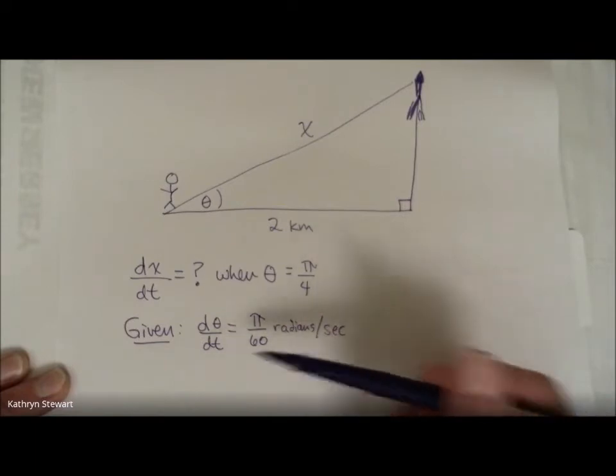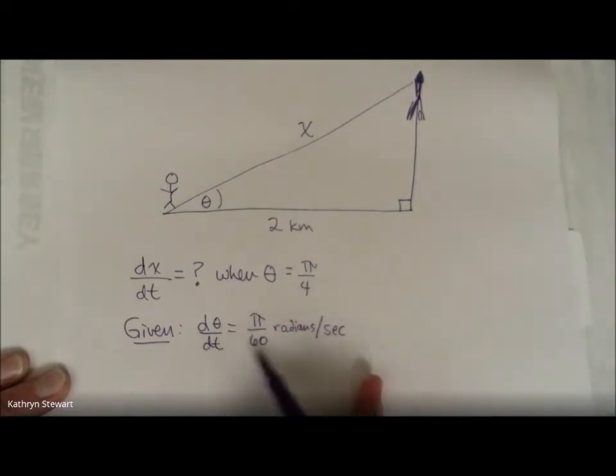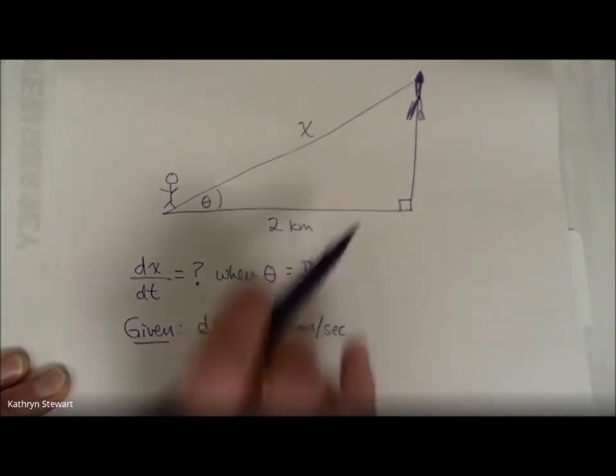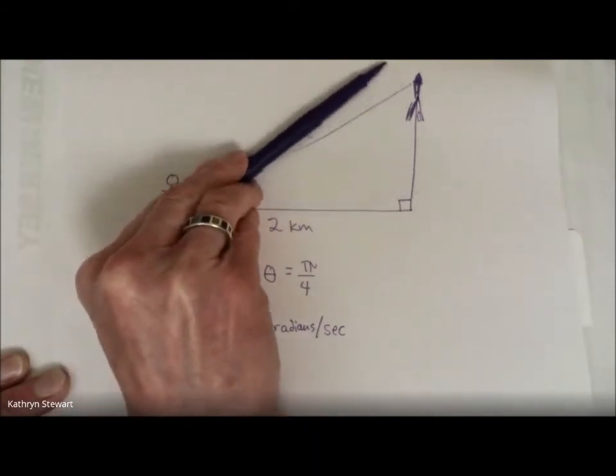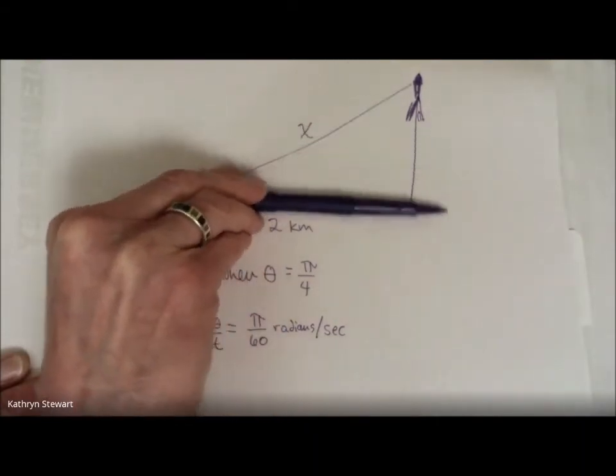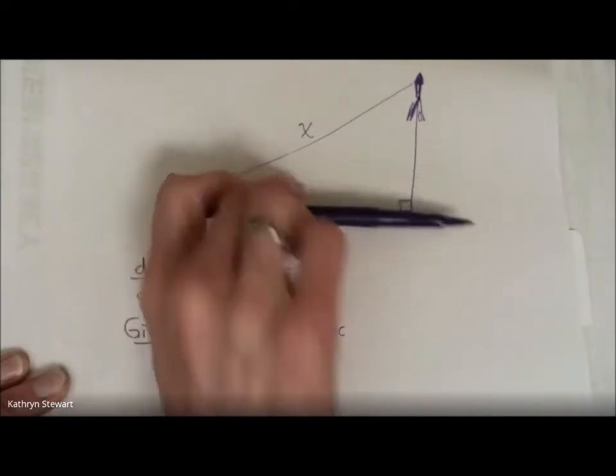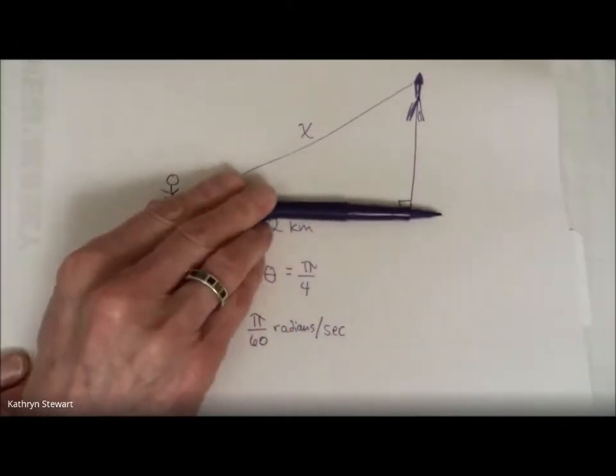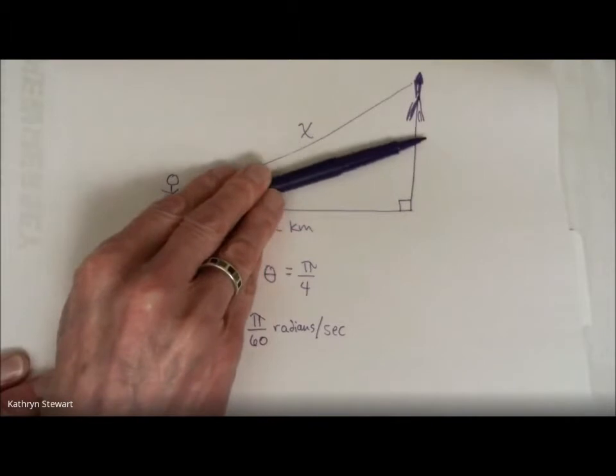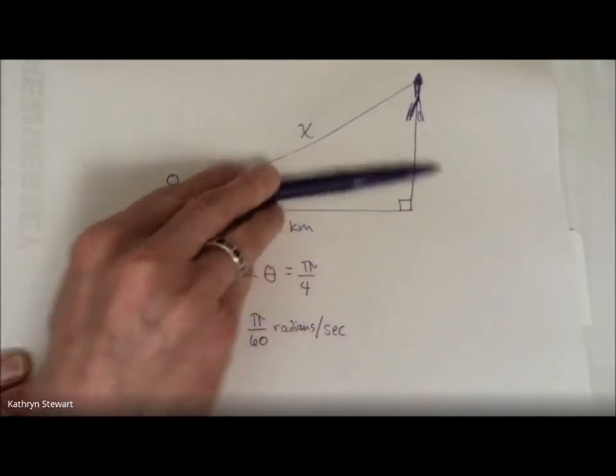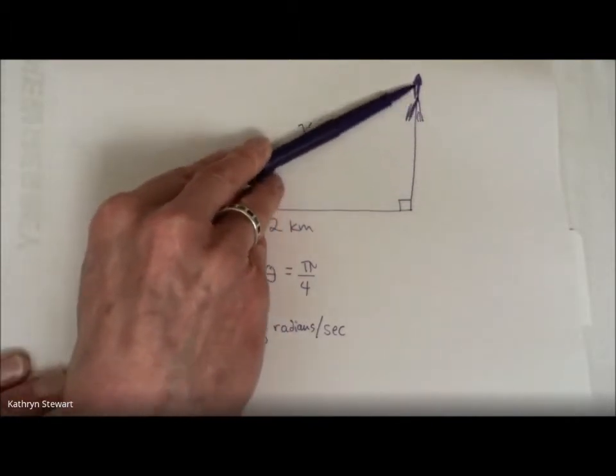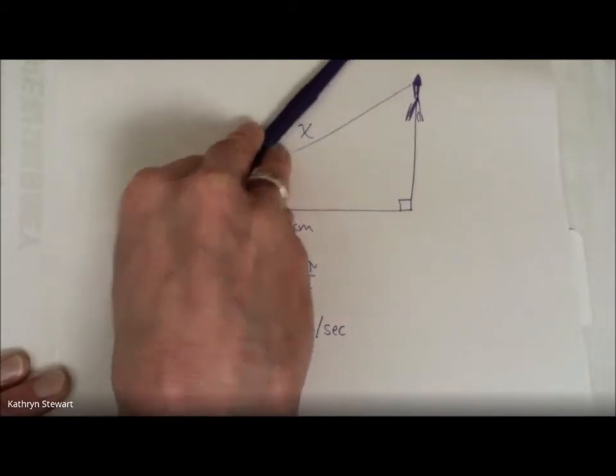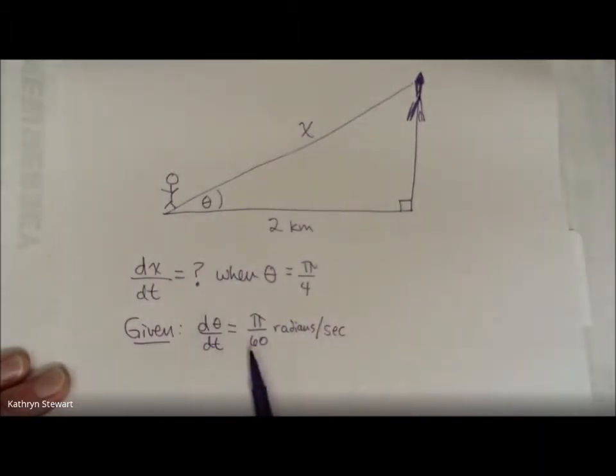Now, this problem might be a little contrived because I'm saying that the rate at which the angle is changing is constant. In the real world, it probably wouldn't be. But anyway, that's okay. We're just going to pretend that for this, for a period of time, the rate at which the observer is tilting her head to follow the rocket is constant. And it is pi over 60 radians per second.